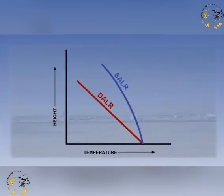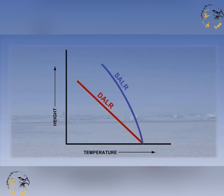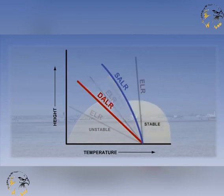So far in this lesson, we have looked at how dry and saturated air behave when forced to rise within different environmental lapse rates. Using this graph, we saw that the value of the ELR and its position helped us decide the stability of the atmosphere. Now let's consider what weather you will encounter with the different types of stability.